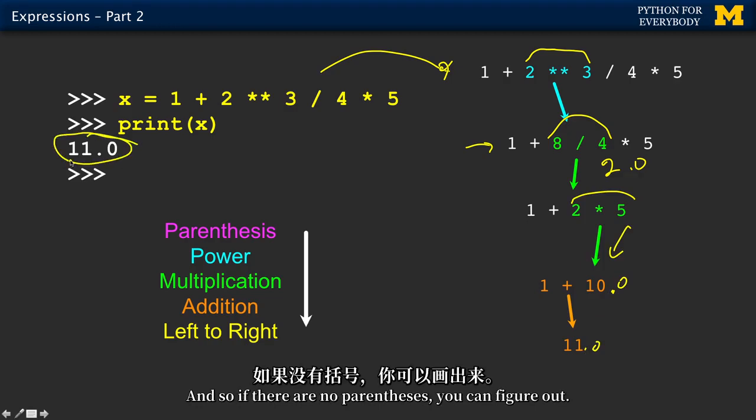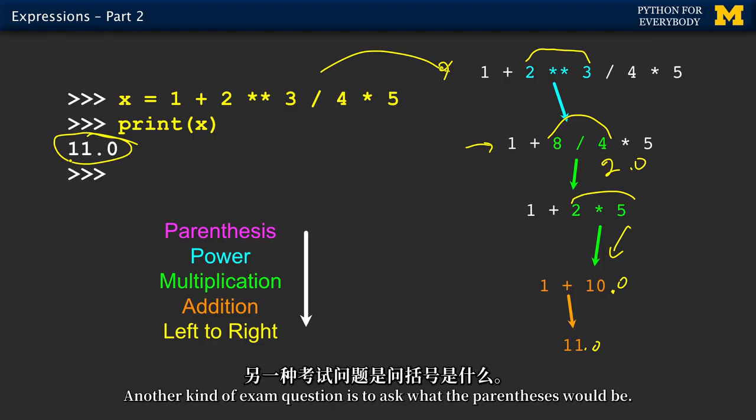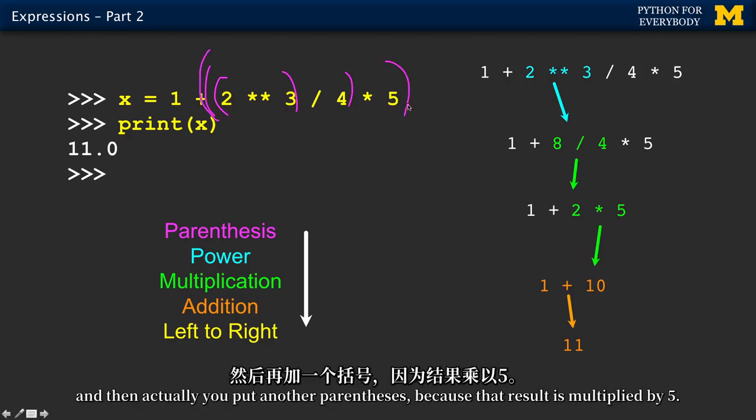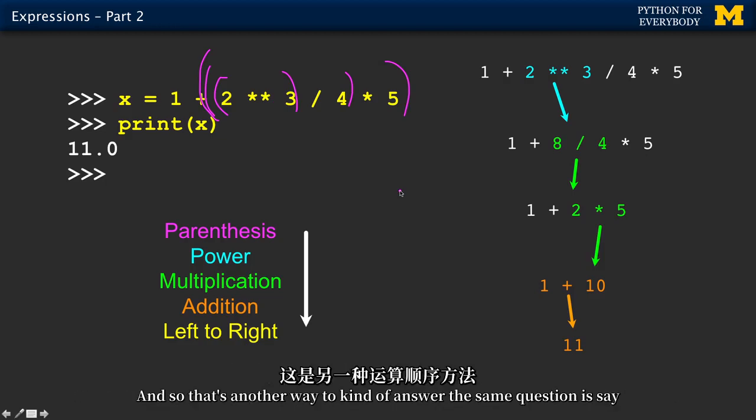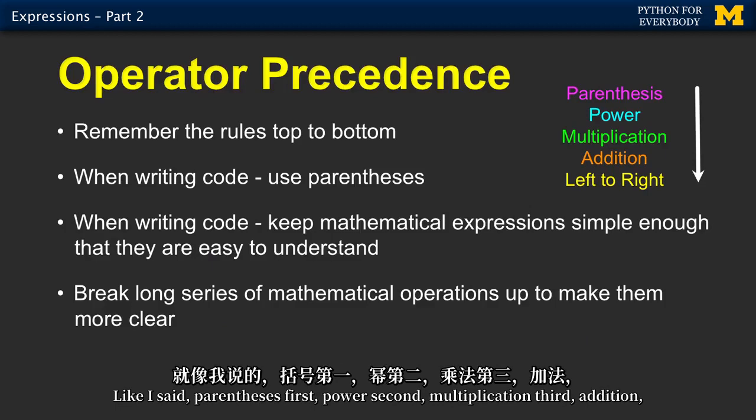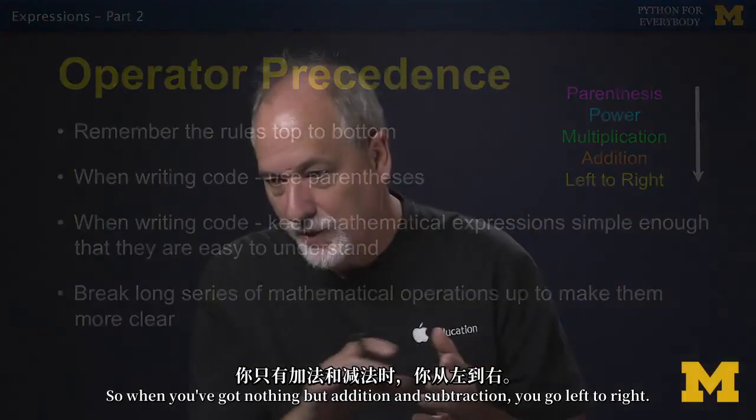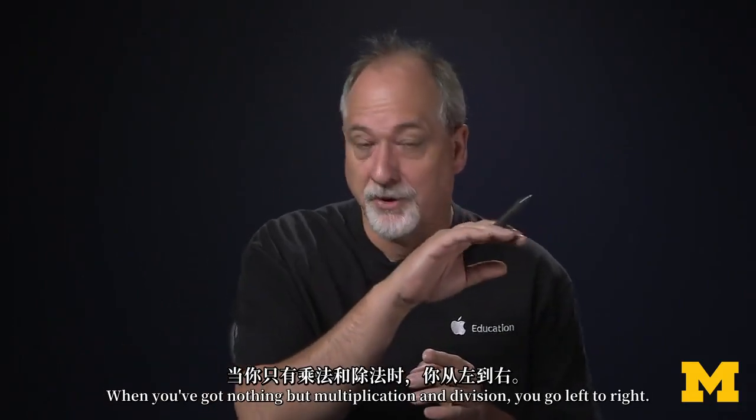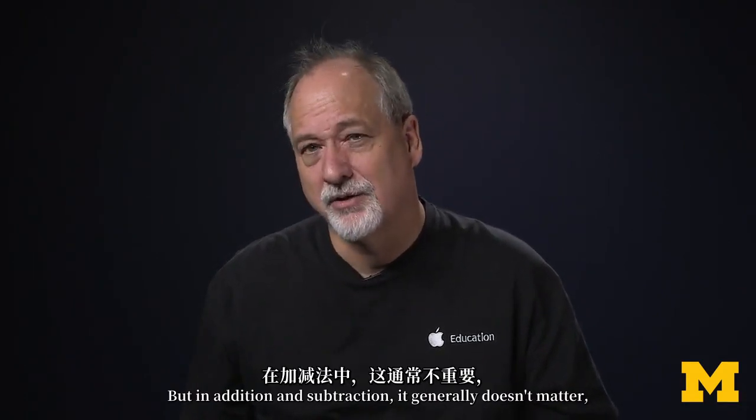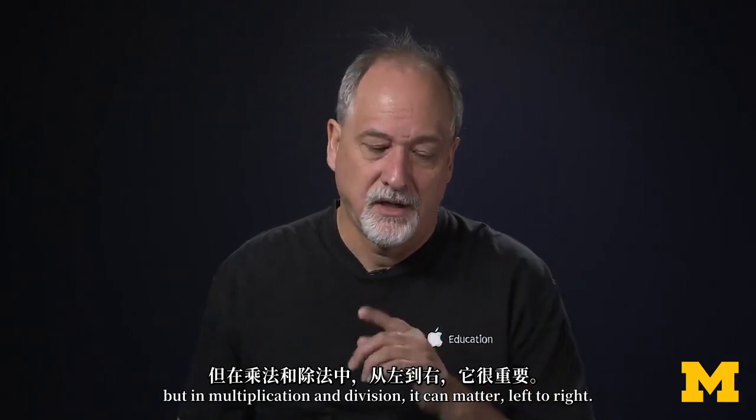And then I have 1 plus 2.0 times 5 and I look and that's the next one. So that ends up being, actually this ends up being 10.0 and that ends up being 11.0. And that's why this prints out 11.0. And so if there are no parentheses, you can figure out. Another kind of exam question is to ask what the parentheses would be. So the exponentiation happens first, the division happens second, and then actually you'd put another parentheses because that result is multiplied by 5. And so that's another way to kind of answer the same question, is say, put the parentheses in where they belong. Like I said, parentheses first, power second, multiplication third, addition, and then left to right. So when you got nothing but addition and subtraction, you go left to right. When you got nothing but multiplication and division, you go left to right.